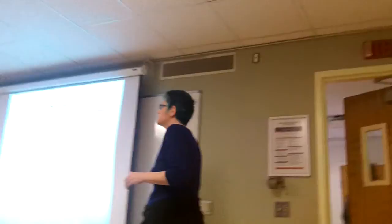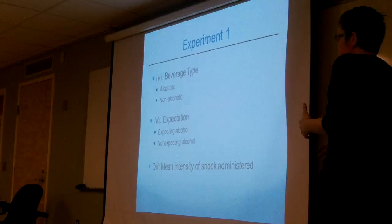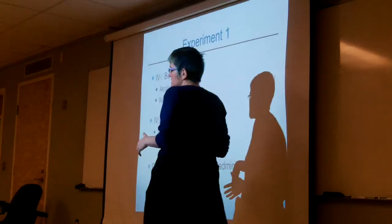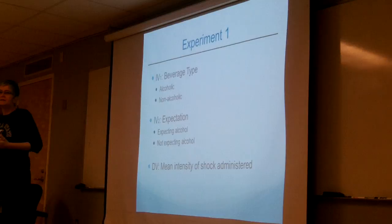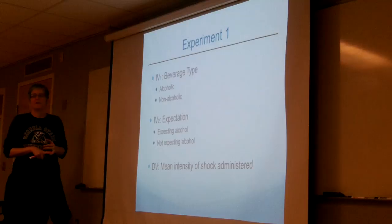Today we are going to look at a lot of graphs and practice recognizing main effects and interactions in line graphs and bar graphs. We're also going to talk about how to calculate F observed, identify F critical, and how to do eta squared for main effects and for interaction from an APA source table. We're going to do that at the end of class today.